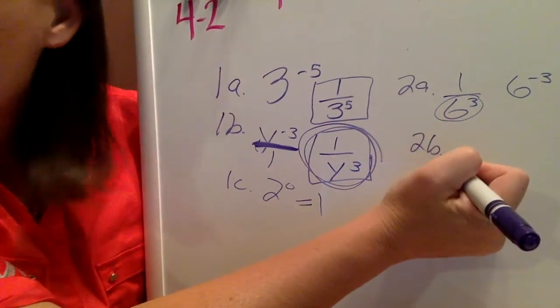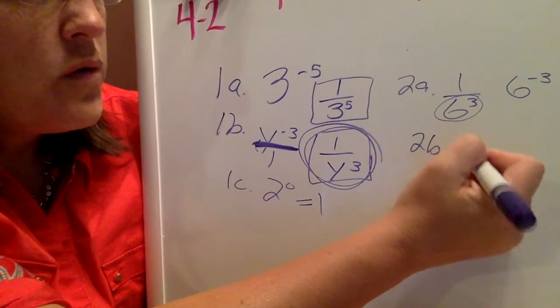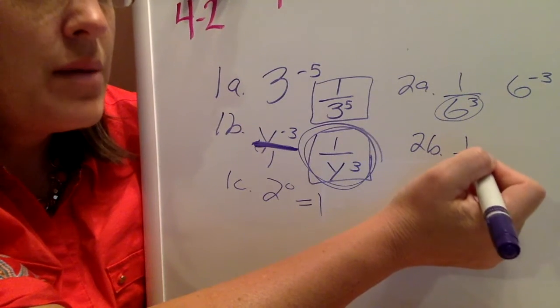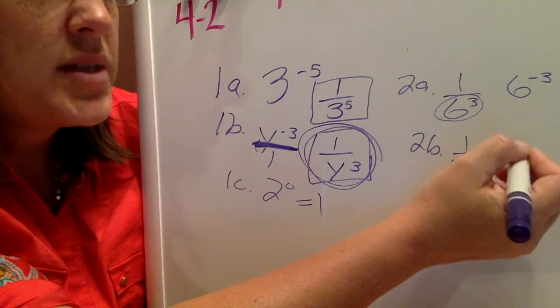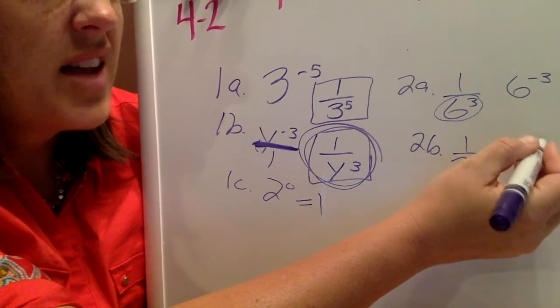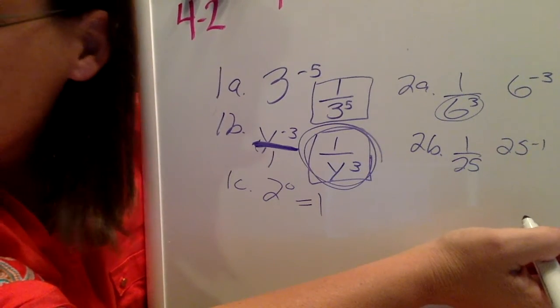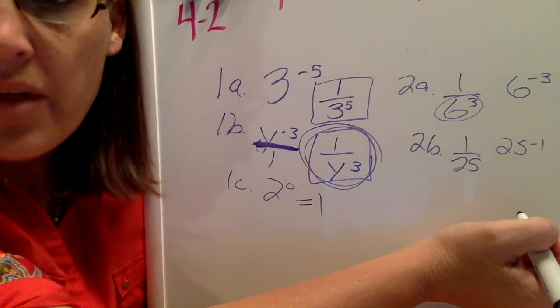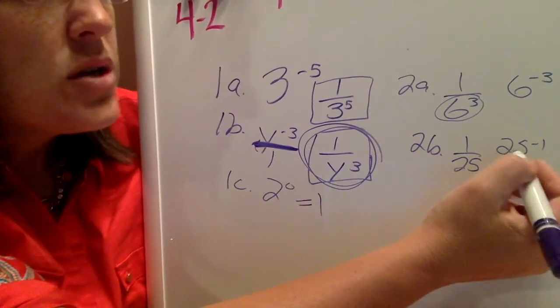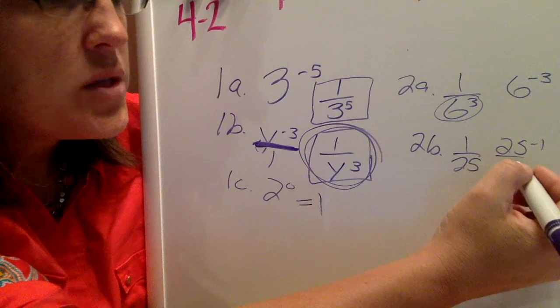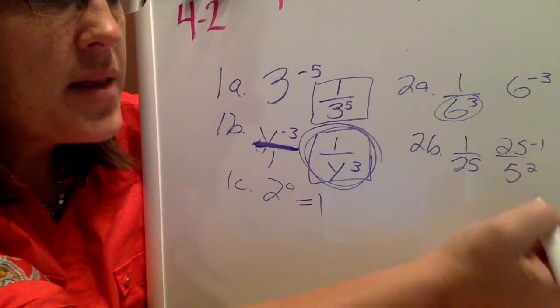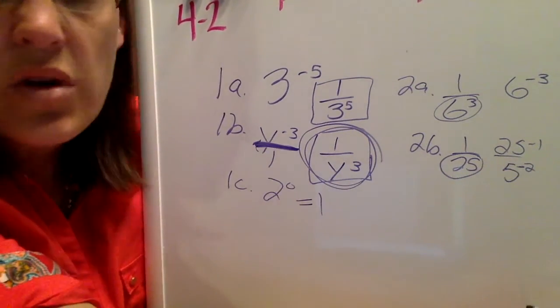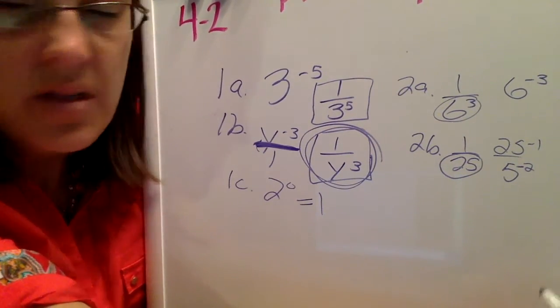For 2b, it says 1 over 25. Well, it says to write it as an exponent. So you might be thinking, well, I could just write down 25 to the negative 1 power. That would work. However, the direction said to write a negative exponent using a number other than negative 1. So 25 is a perfect square. So I will just write that as 5 squared. But in order for that to end up in the denominator, that 2 would have had to have been negative. So it's 5 to the negative 2.